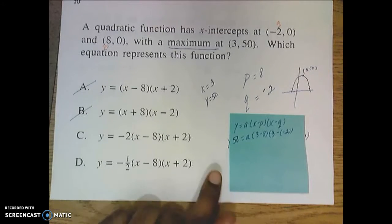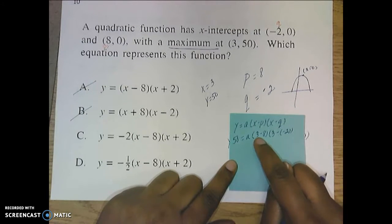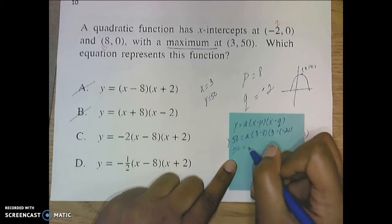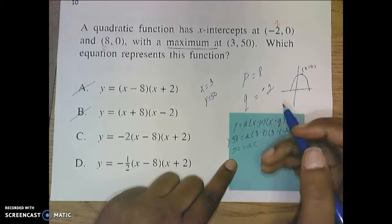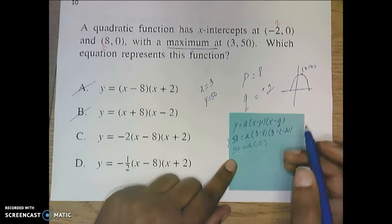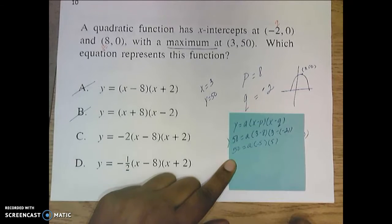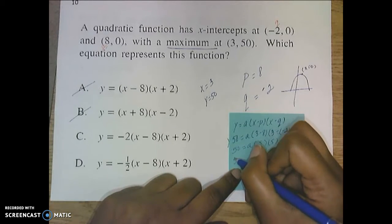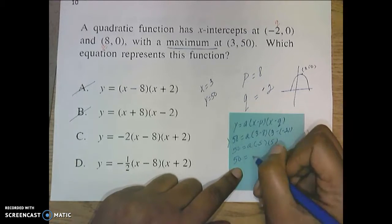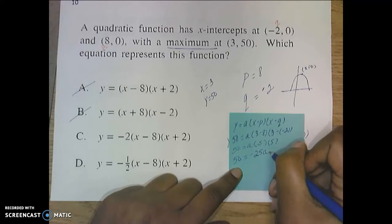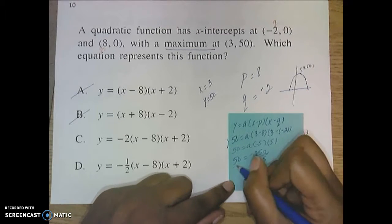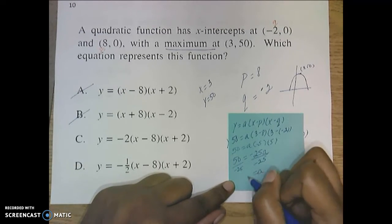Okay, so here's everything substituted in. 50 for y, 3s for x, and P and Q. So what's going to happen here is that 50 is going to equal A, 3 minus 8, negative 5. 3 minus a negative 2 is the same thing as 3 plus 2. So we'll get 5. 50 is going to equal a negative 5 times 5 times A is going to be a negative 25A. The last step is going to be to divide both sides by negative 25, and A is going to be a negative 2.